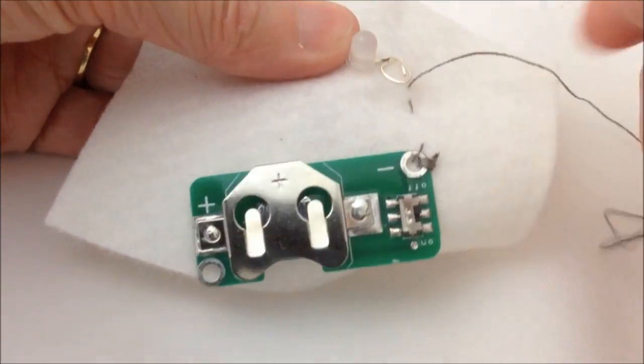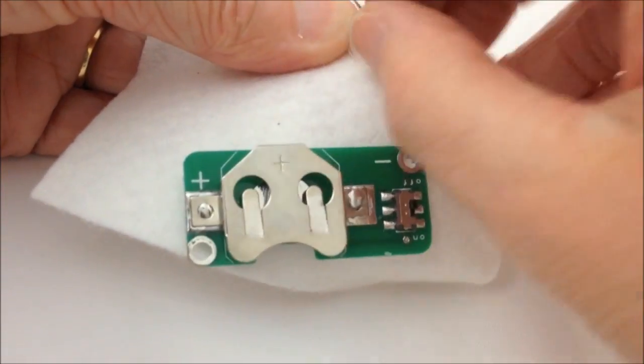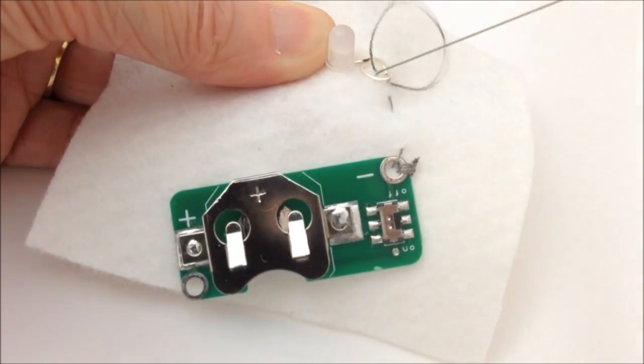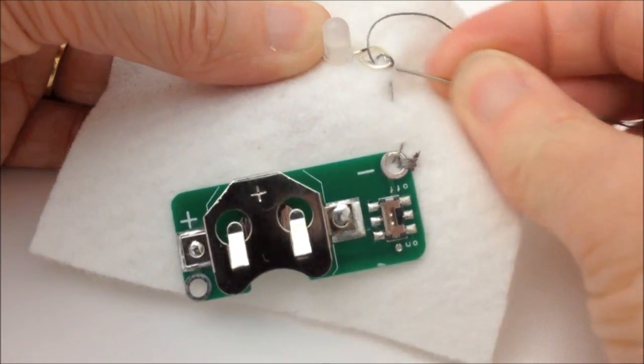Just holding it in position with my other hand and then doing the over sewing stitches just the same as we did on the board. Putting them nice and tight.